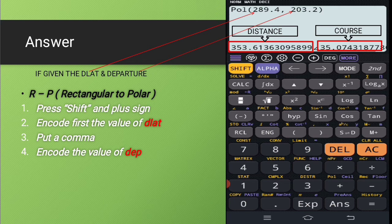Then after that, you encode the value for the difference of latitude, which is 289.4 minutes. So it should be in nautical miles. So if you have the given difference of latitude in degrees, then you should divide it by 60 in order for you to determine the equivalent in nautical miles.